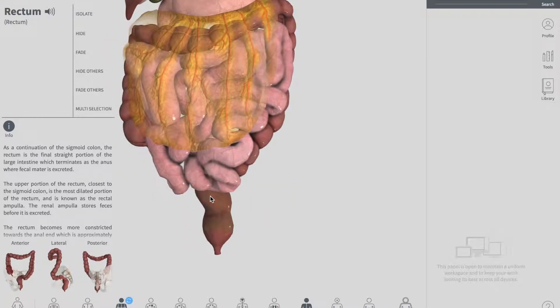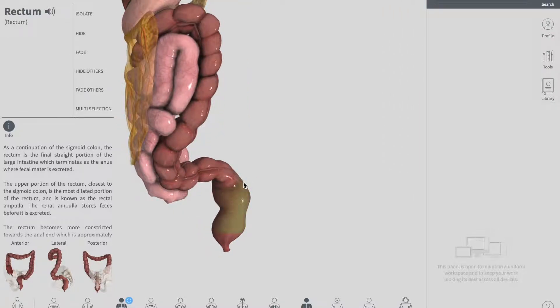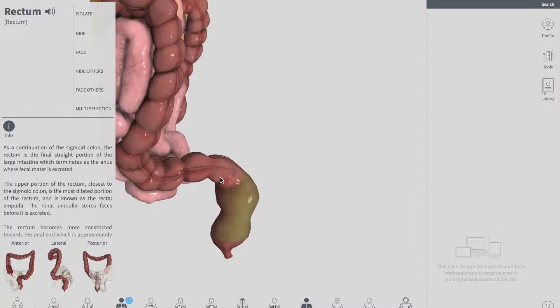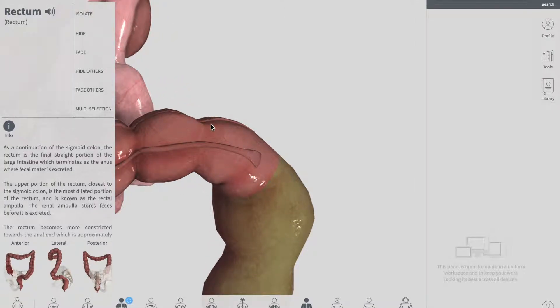The course of the rectum is marked by two flexors. Remember this one. There are two important flexors in the rectum. The first flexor is the sacral flexor at the second level, right down there, exactly down there. This flexor you can see as it is turning from the sigmoid colon down to the rectum.